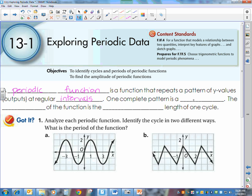One complete pattern is called a cycle. And the period of the function is the horizontal length of one cycle. So that means we're going to be looking along the x-axis to find the periods of our functions.